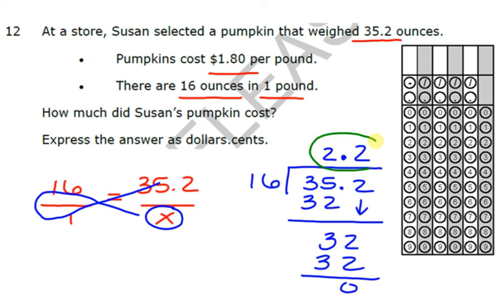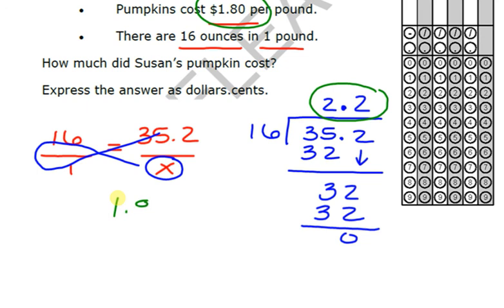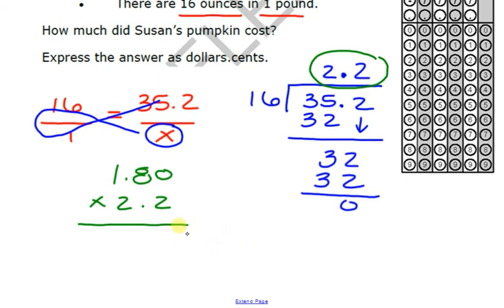Now, I've done step one of my problem. I know that that pumpkin weighs 2.2 pounds and that it's $1.80 per pound. Now, all I need to do is multiply, okay? 1.80 times 2.2. Remember, with multiplication, don't worry about lining up your decimals. You take care of that at the end. 2 times 0 is 0. 2 times 8 is 16. So we carry the 1, write the 6. 2 times 1 is 2, plus 1 is 3. Now, we're going to move on to the next 2. So we're going to put a placeholder. 2 times 0 is 0. 2 times 8 is 16. So we have the 1, put the 6. 2 times 1 is 2, plus 1 is 3. And we're going to go ahead and add this up.